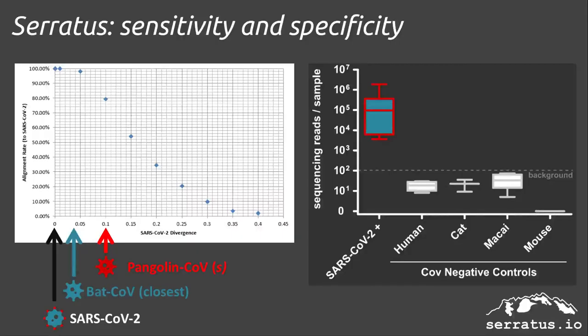Most importantly, this method is both sensitive and specific for detecting coronaviruses. In contrast to KMER-based methods, this is not only sensitive for detecting known coronaviruses — it will also detect viruses that are divergent from known sequences.